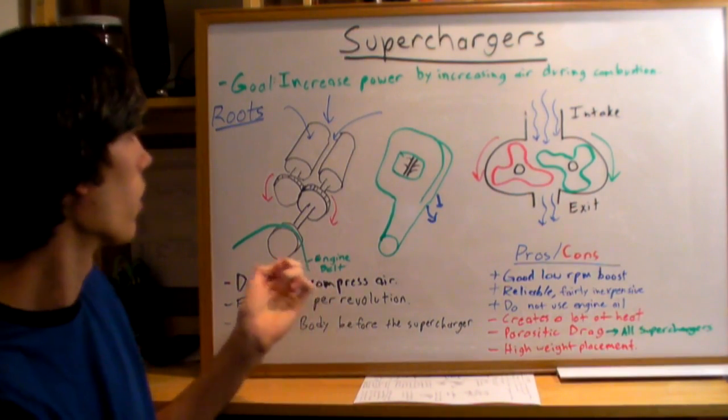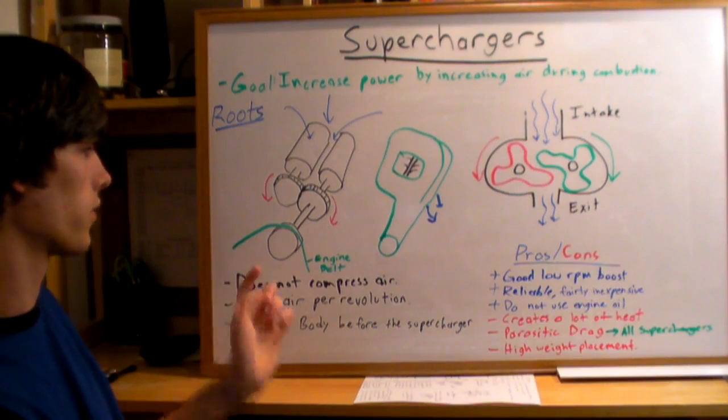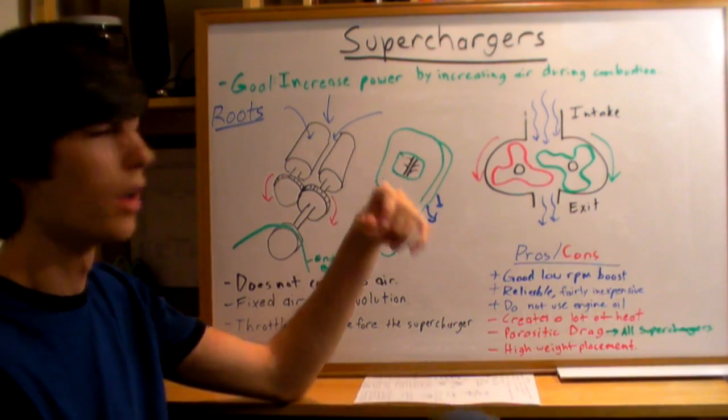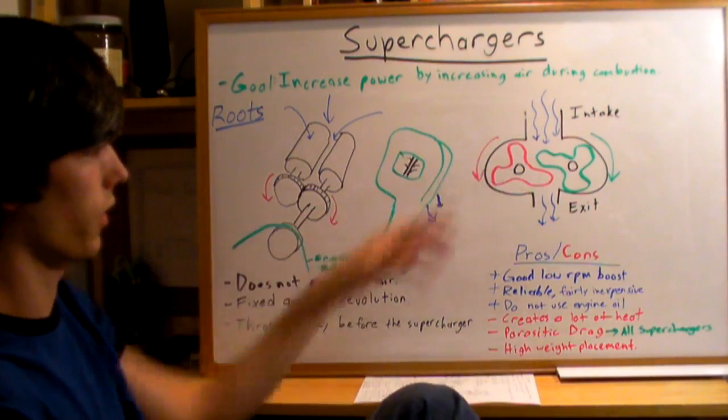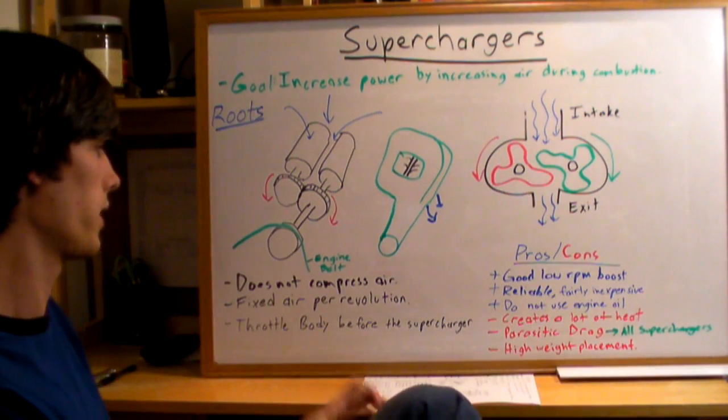One thing about a roots supercharger that differs from others is that it does not actually compress the air. The air compression occurs in the intake manifold. The roots supercharger just simply forces it in and makes it come in faster, but it doesn't actually compress it within. The problem with this is that it creates a lot of heat.